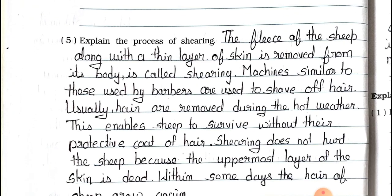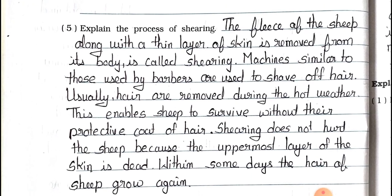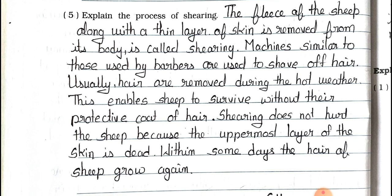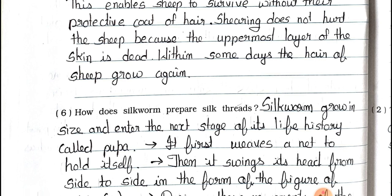See question number 5: Explain the process of shearing. Answer: The fleece of the sheep along with a thin layer of skin is removed from its body — this is called shearing. Machines similar to those used by barbers are used to shave off hair. Usually, hair are removed during the hot weather. This enables sheep to survive without their protective coat of hair. Shearing does not hurt the sheep because the uppermost layer of the skin is dead. Within some days, the hair of sheep grow again.